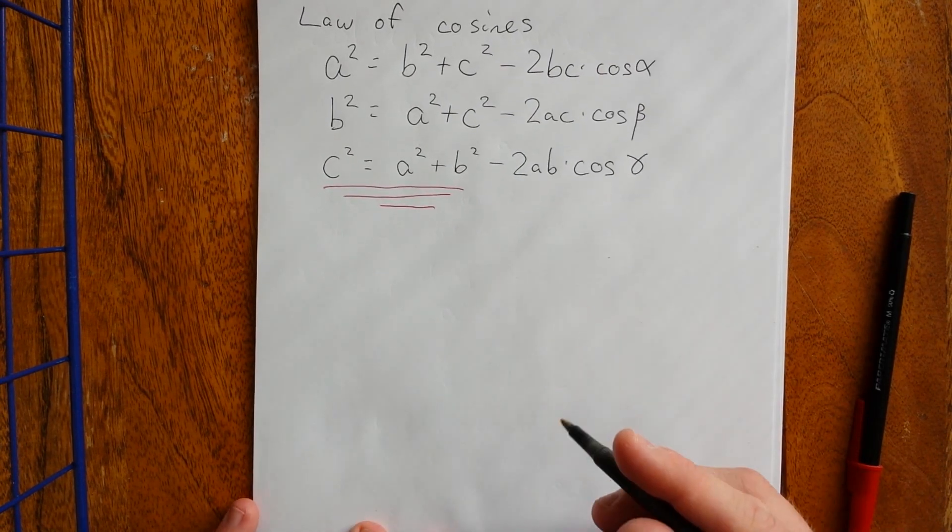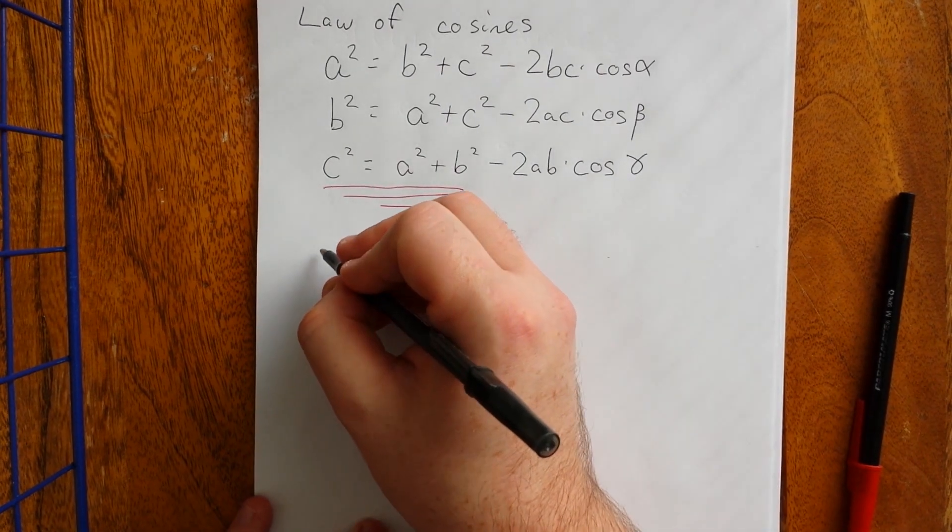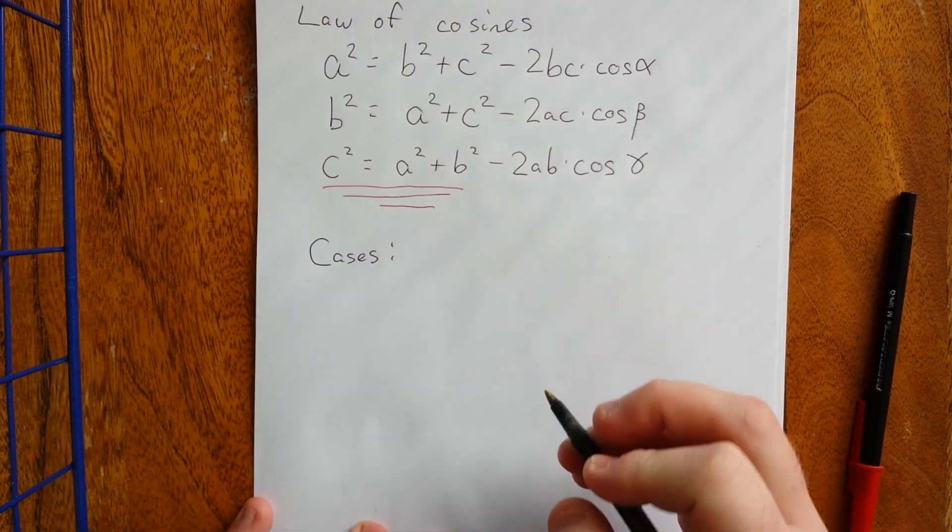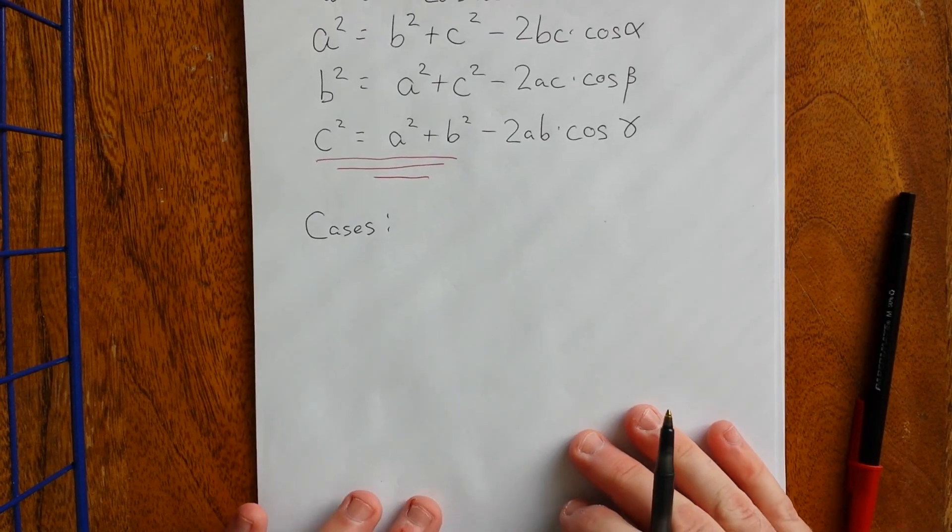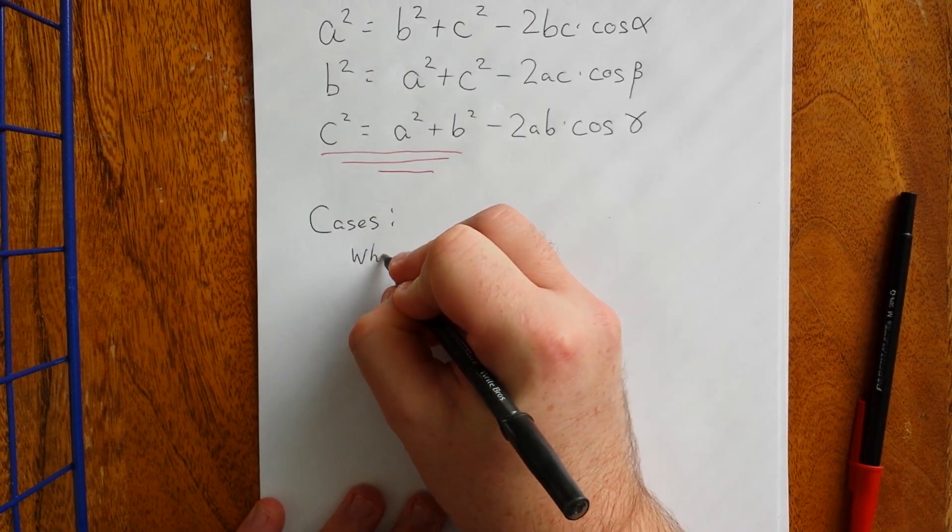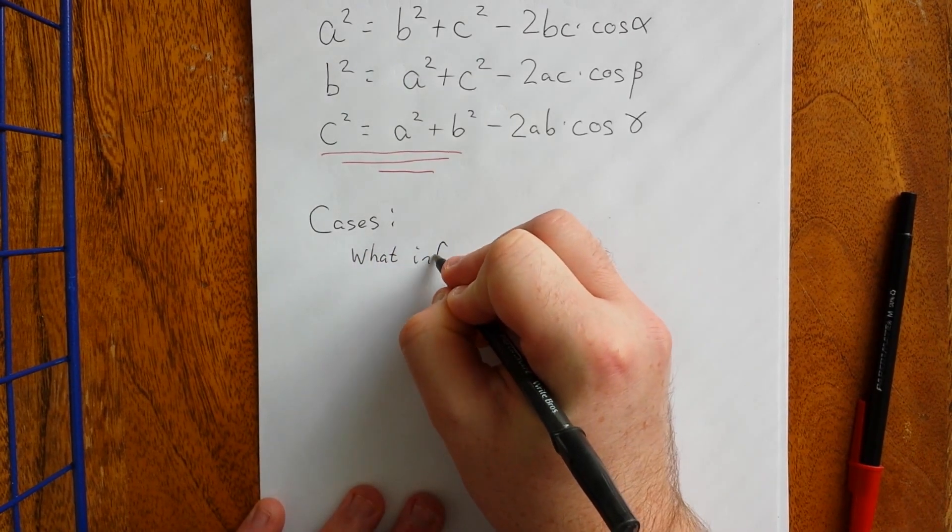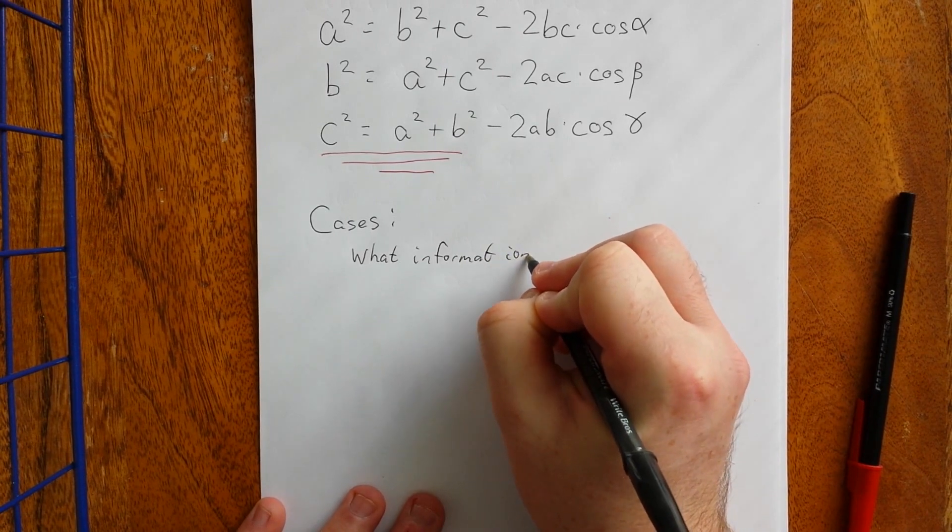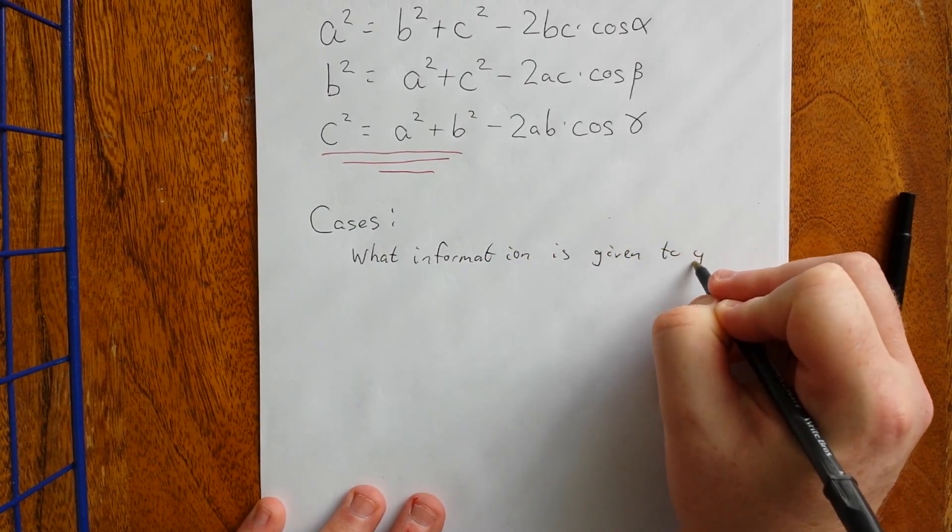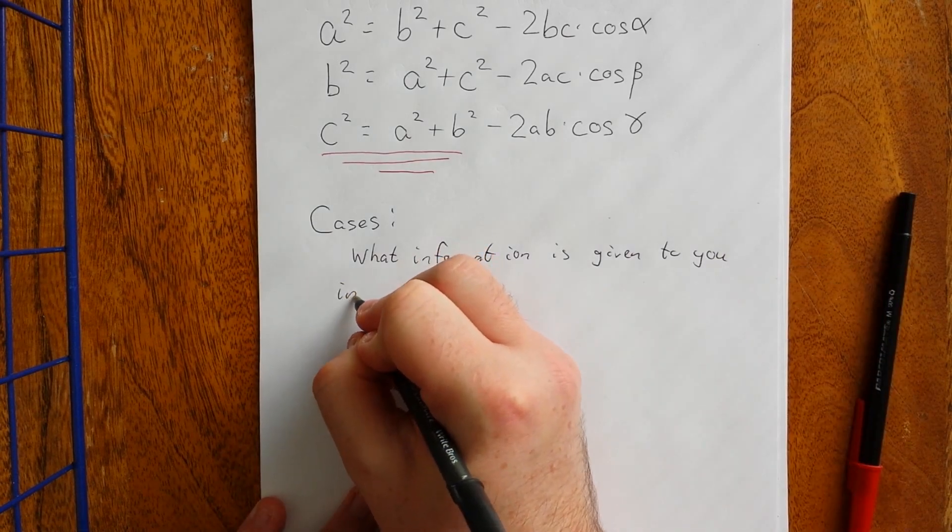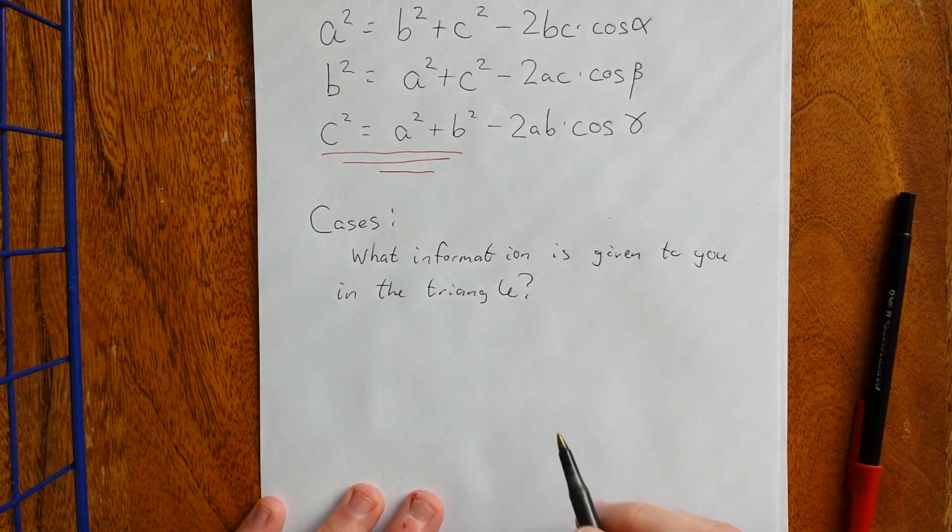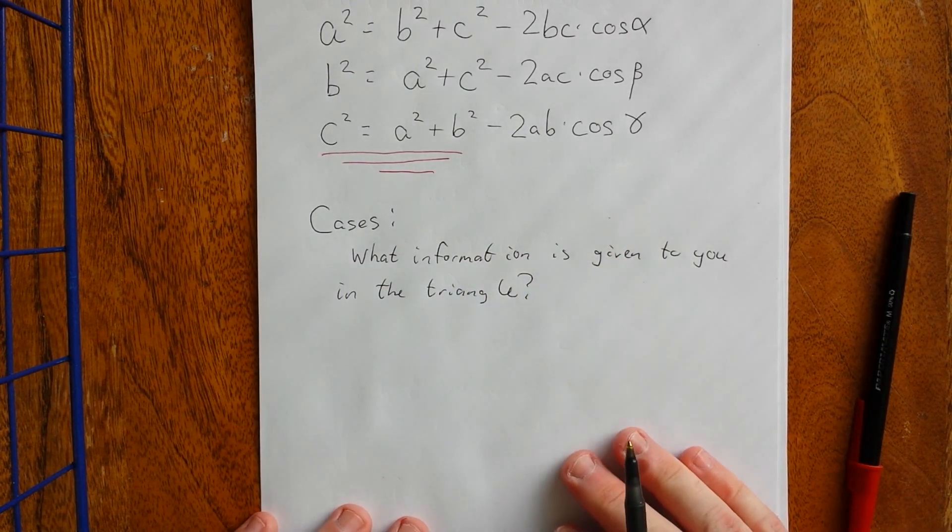Now when we're talking about applying any of these identities, we need to talk about the different cases for right triangles, or excuse me, cases for triangles. So there are a total of five different cases, and it's going to be what information is given to you about the triangle.